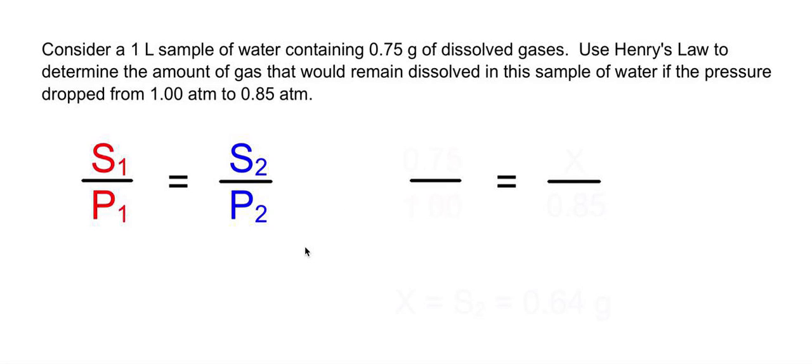The problem tells you there's 0.75 grams of dissolved gases in a liter sample of water. You're going to use Henry's law to determine the amount of gas that remains dissolved in the sample if the pressure drops from 1.00 atm to 0.85 atm.